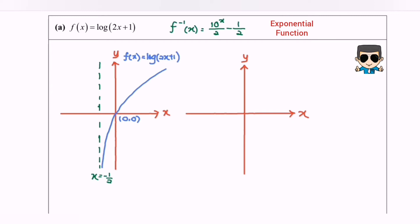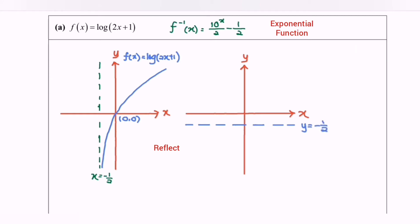First, refer to the left hand side. We have a green colored vertical asymptote which is x equals negative 1 over 2. In order to sketch the F inverse, you have to reflect the situation. The reflection axis will be y equals x. So referring to the vertical asymptote x equals negative 1 over 2 — if you reflect the situation, x will become y. So in this case y will become negative 1 over 2. I'm going to use the blue color. y equals negative 1 over 2 — that will be the horizontal asymptote.